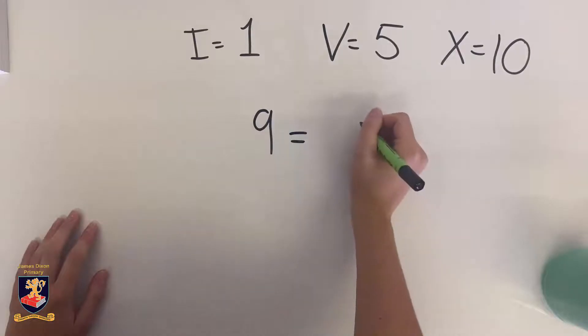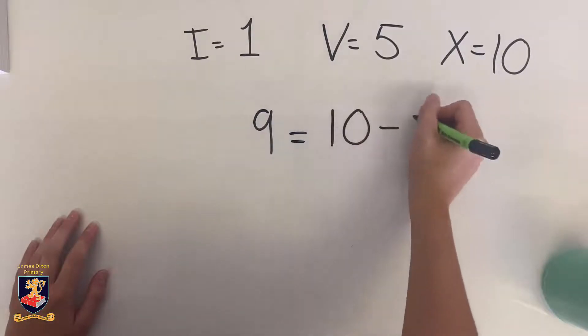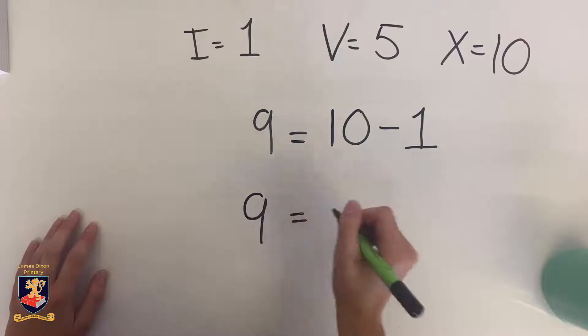For nine, it's the same as saying one less than ten, or ten subtract one. So when we write nine in Roman numerals, we're going to say one less than ten.